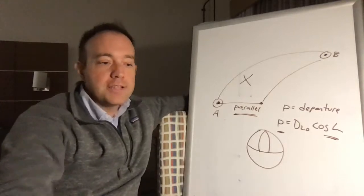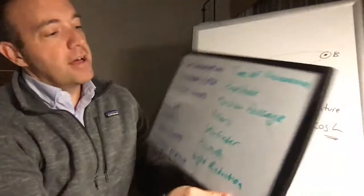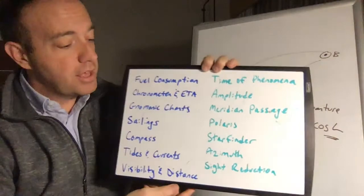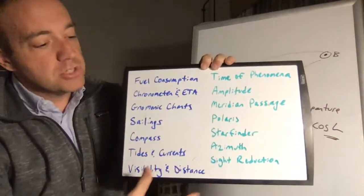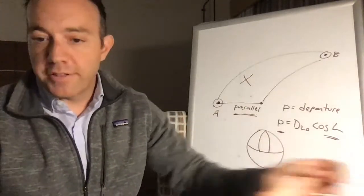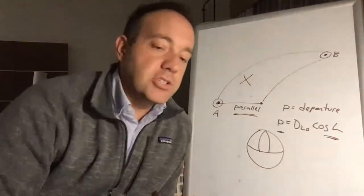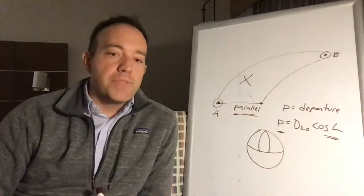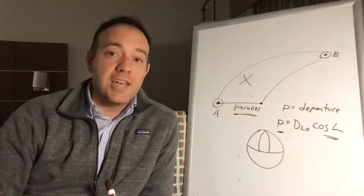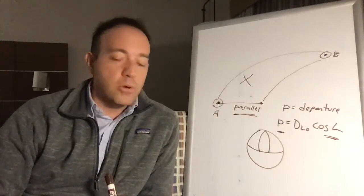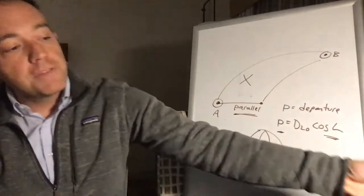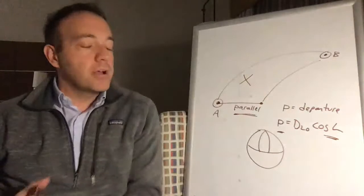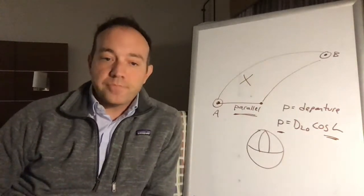Parallel sailings is just one element of the broader category of sailings you may find on your Coast Guard license exam. In the description link there's a book called The Cutterman's Guide to Navigation Problems — a free resource that solves all these types of problems for your exams or general knowledge, including a subchapter on parallel sailings and sailings in general.